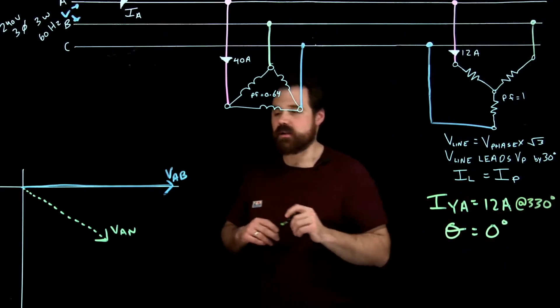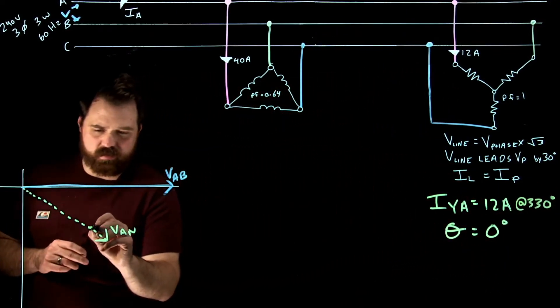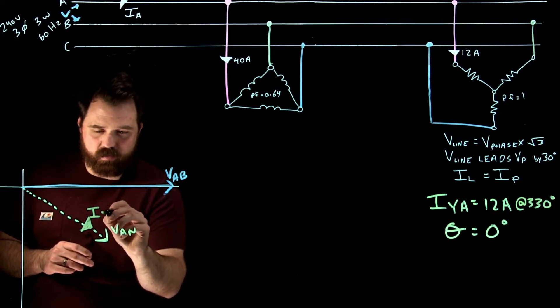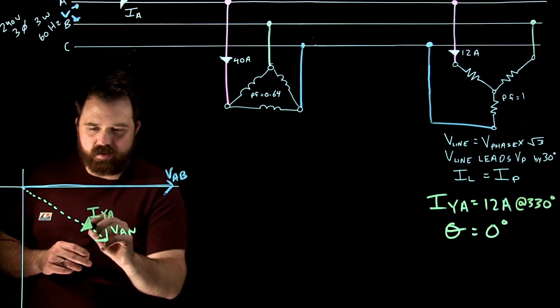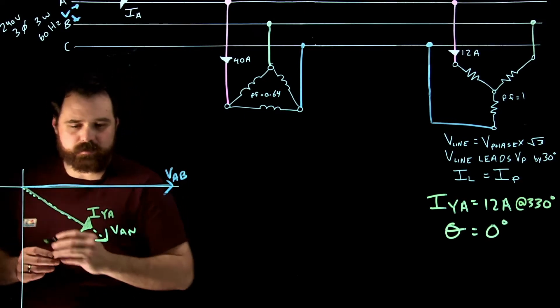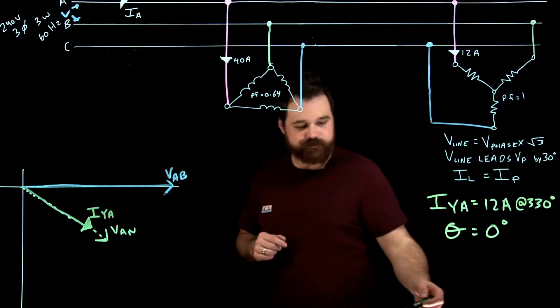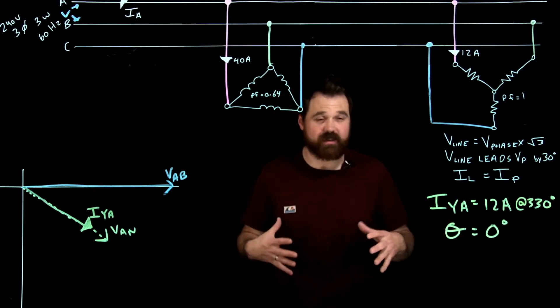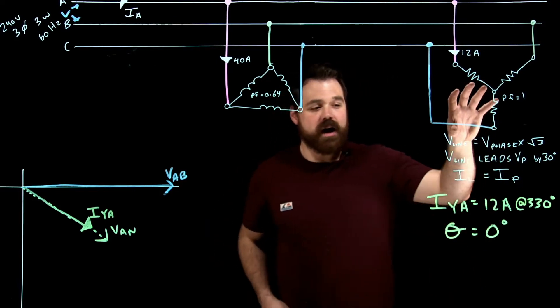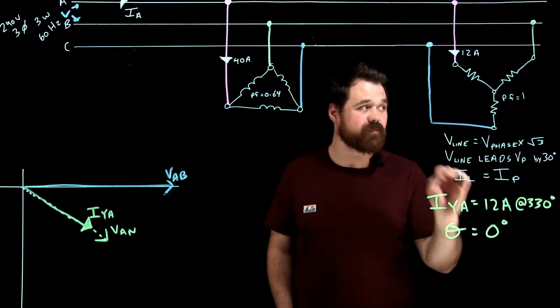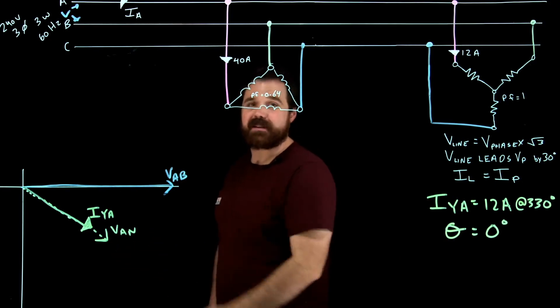So I'm going to just put that on here. This would be I Y A, and those are both at 330 degrees. So that's kind of the trick there is remembering that when I'm putting my currents on here, they're based off of my phase voltage, which is going to be lagging by 30 degrees.